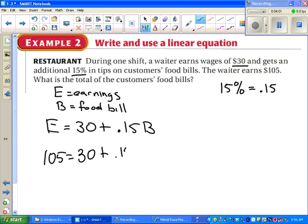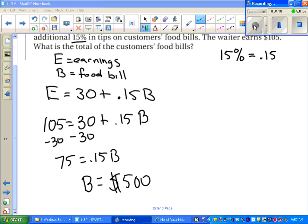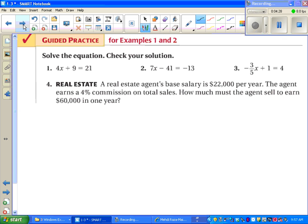The thirty doesn't change. The .15 doesn't change. The food bill, we don't know. So we're going to use order of operations and the four methods that we saw earlier to solve for B. After going through the proper steps, we see that the total food bill was five hundred dollars. At this point, you can pause the video and do the guided practice now. Or you can continue watching and do those later.